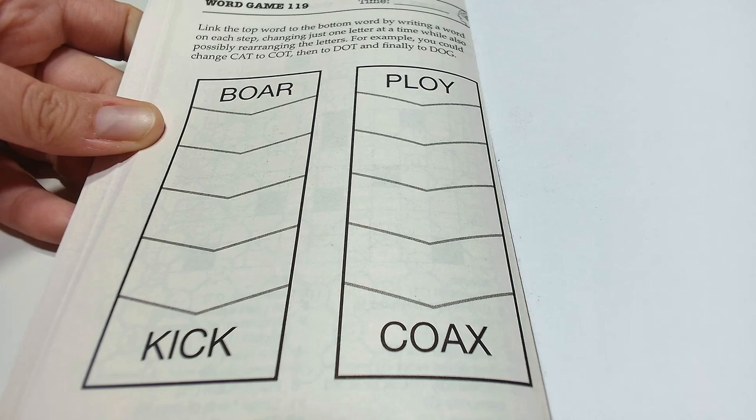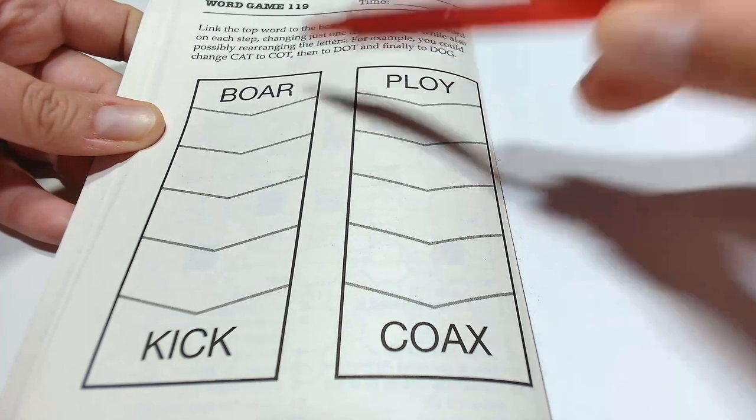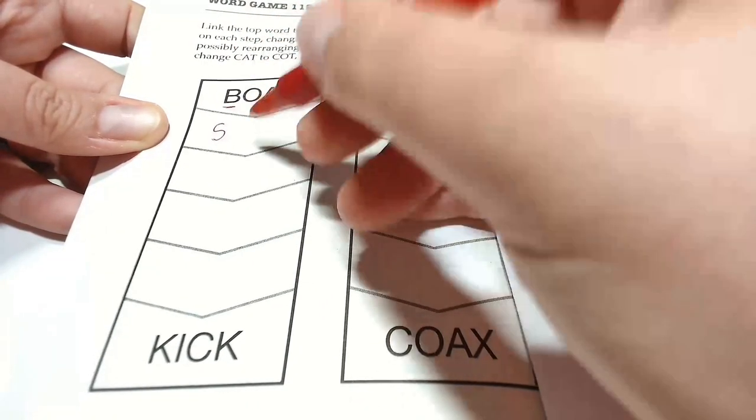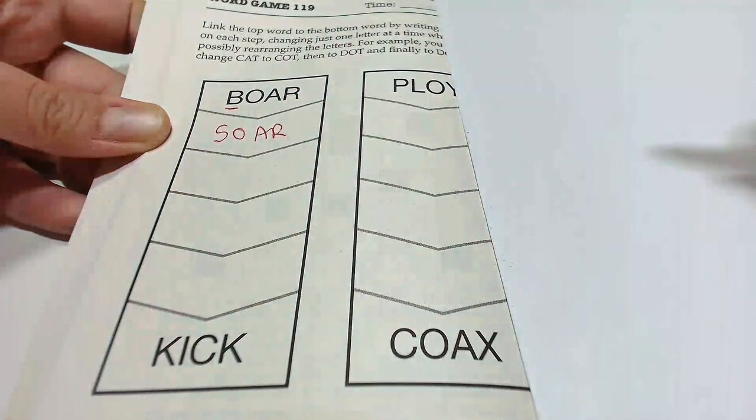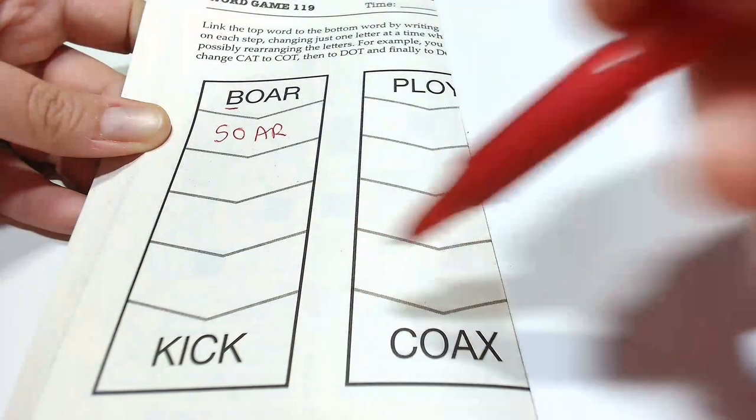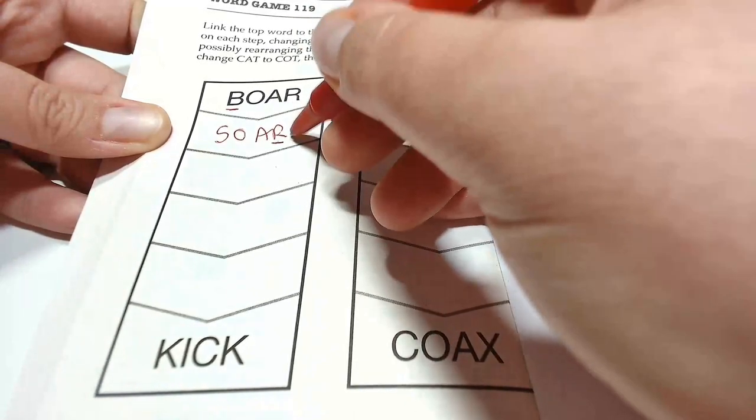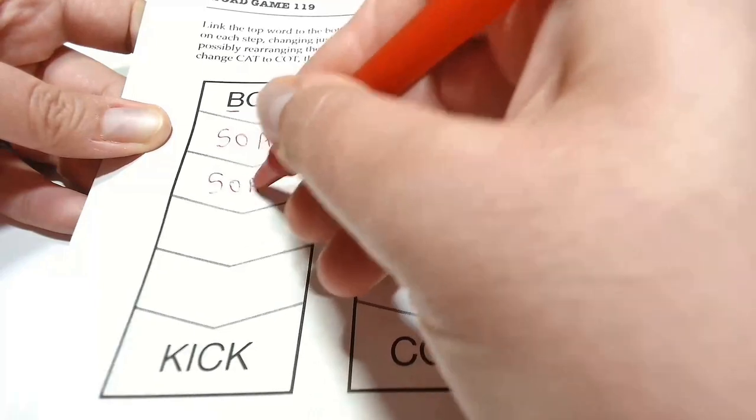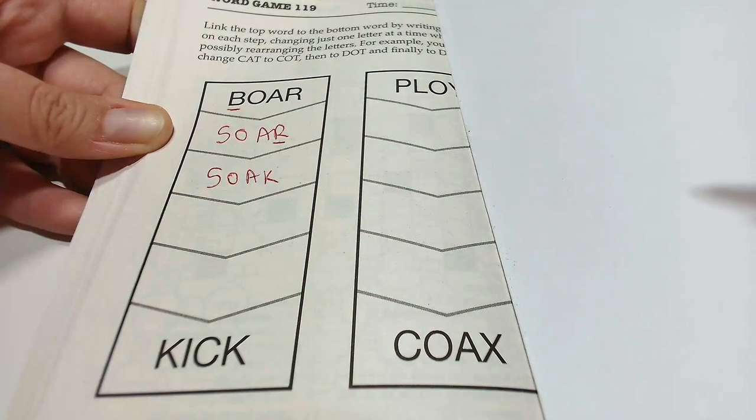BOAR - let's change B into S - SORE. Now what do we want here? We want a K, yes, at the end. For example, the word by changing R into K we have SOAK, soaking wet.